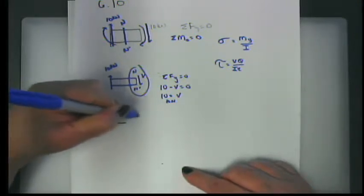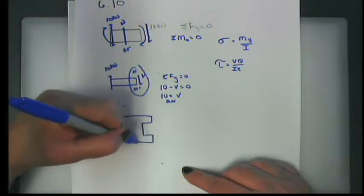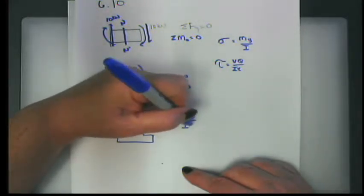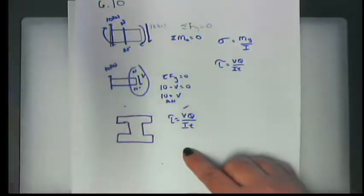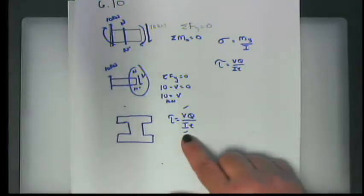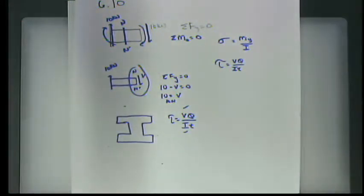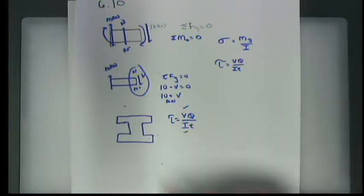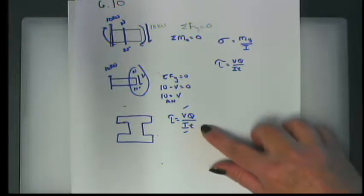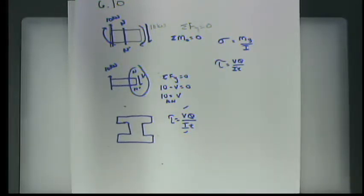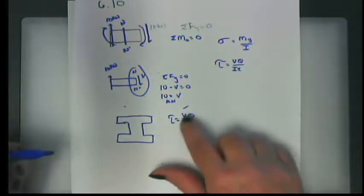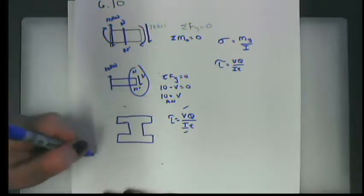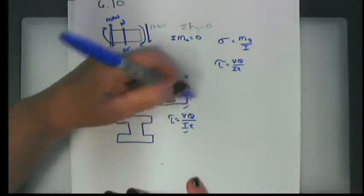That means that on this I-beam, tau equals VQ over IT. We know V is 10 kN, the same everywhere on this beam. We can determine I because it is an I-beam. Then we need to determine Q at point A and T at point A. After that, we decide where the ratio Q over T is greatest — that is where shearing stress will be greatest. For both parts, V and I are exactly the same.